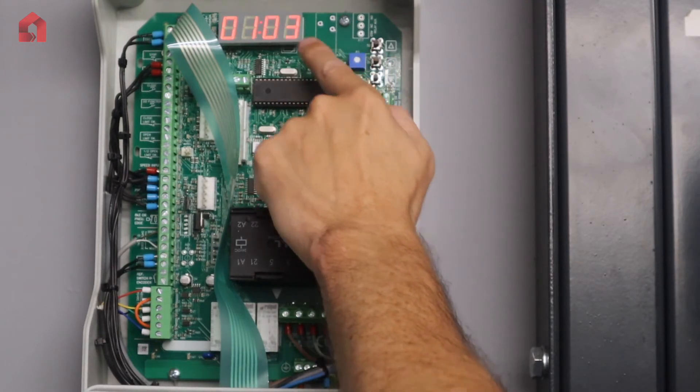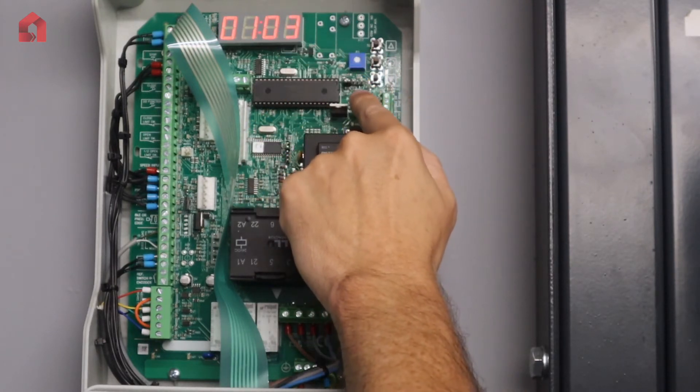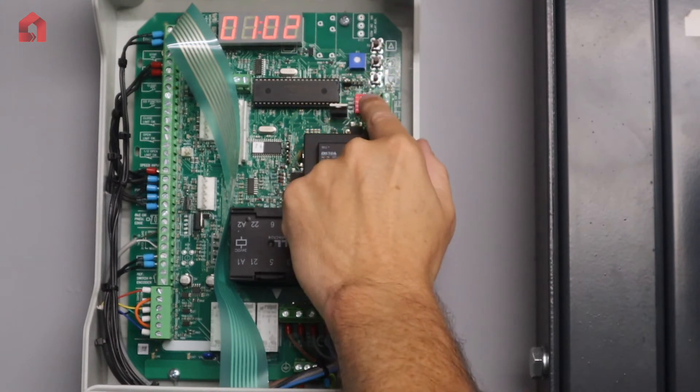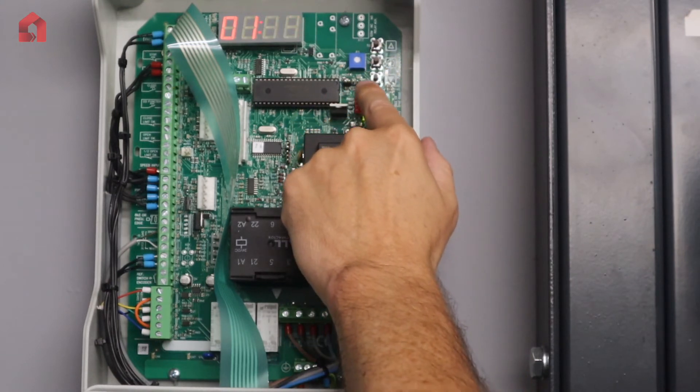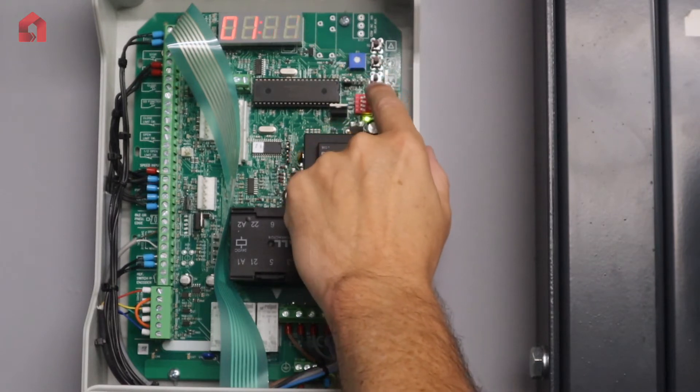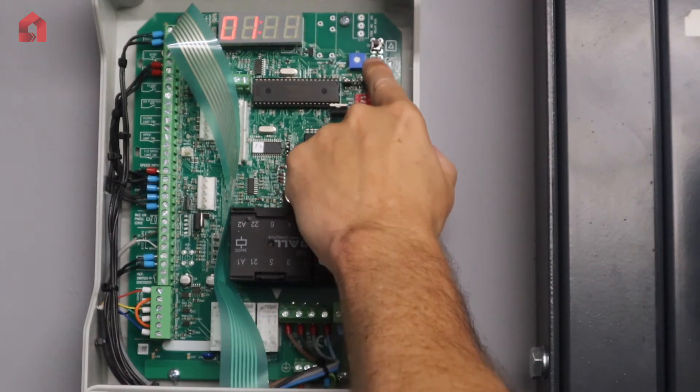press the middle stop, the right hand side display will flash. If I then change it to 02, that will make it impulse up dead man down. If I change it to 01, that will make it dead man both ways.